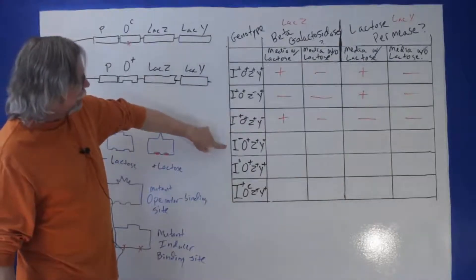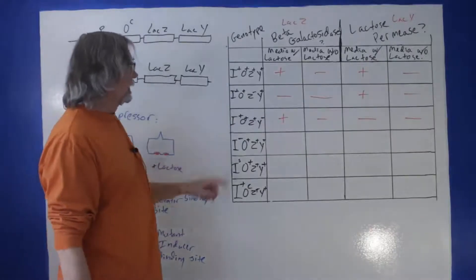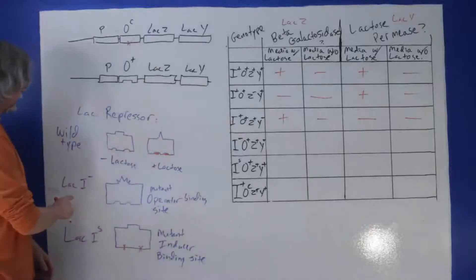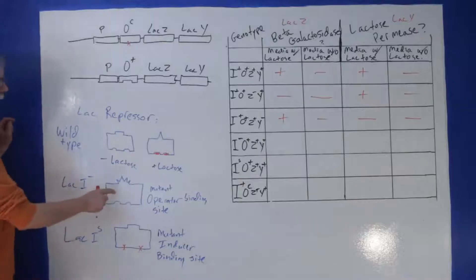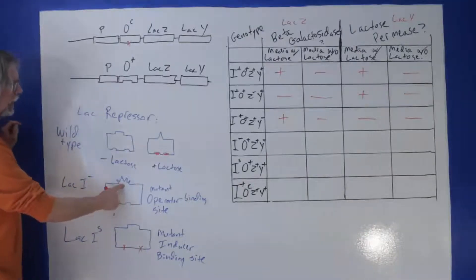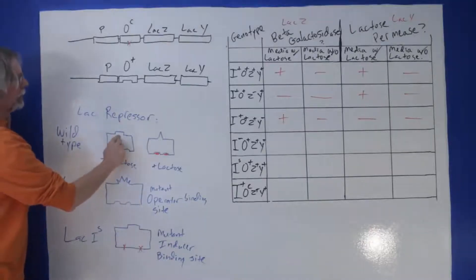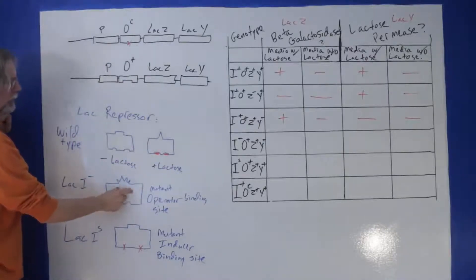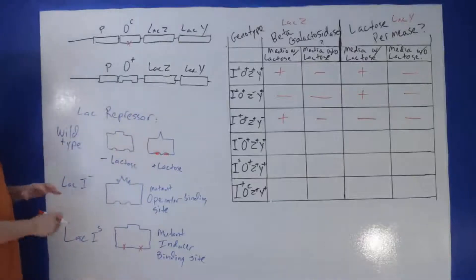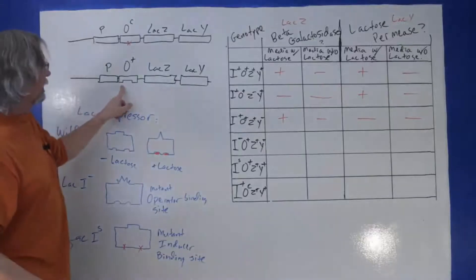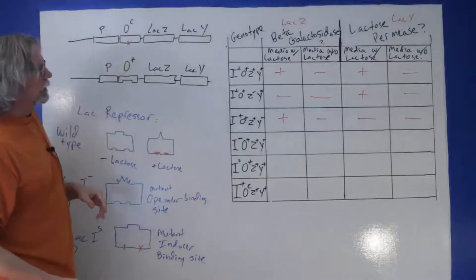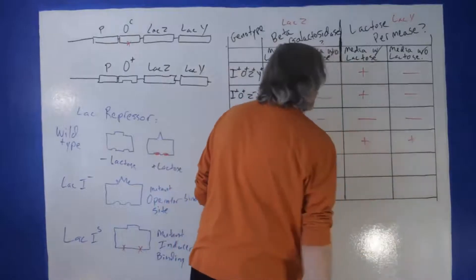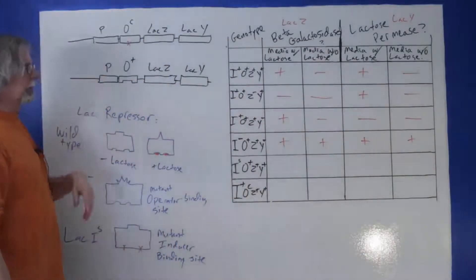In this example, the mutation is in the lac repressor gene — a null allele, or at least non-functional. The repressor can't bind to the operator, either because it's absent or because the operator-binding site is mutated. If it can't bind to the operator, this operon can't be shut off, resulting in constitutive expression — in both the presence and absence of lactose.